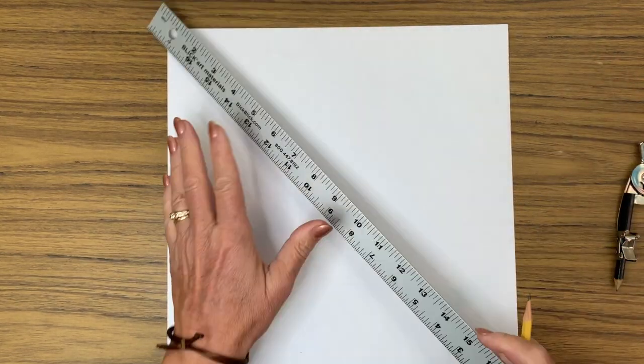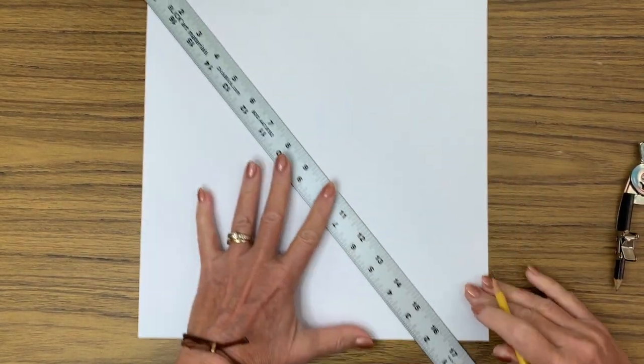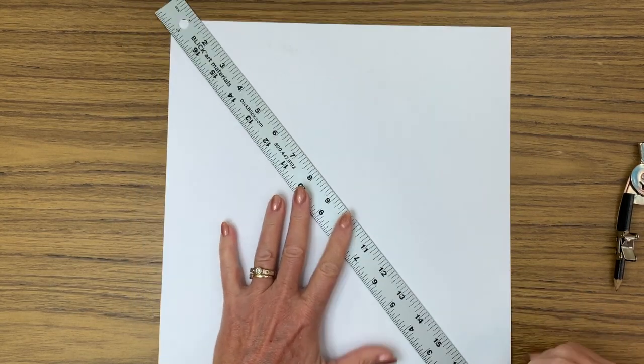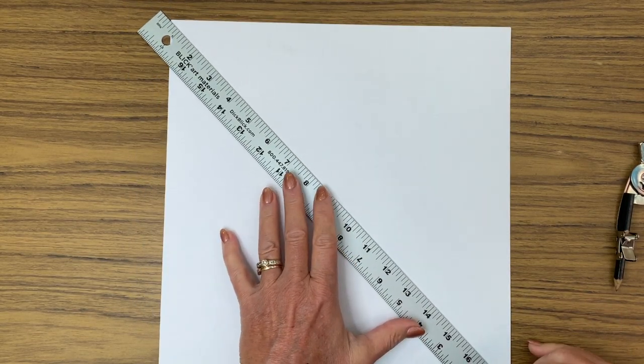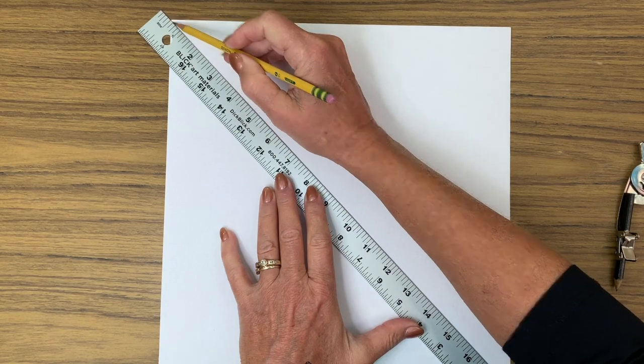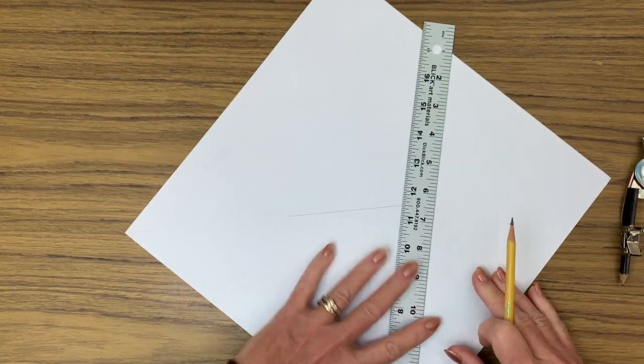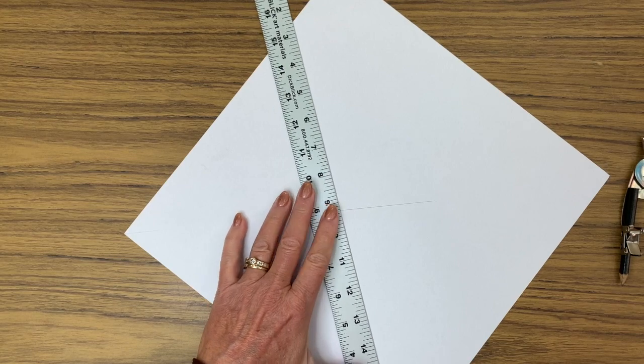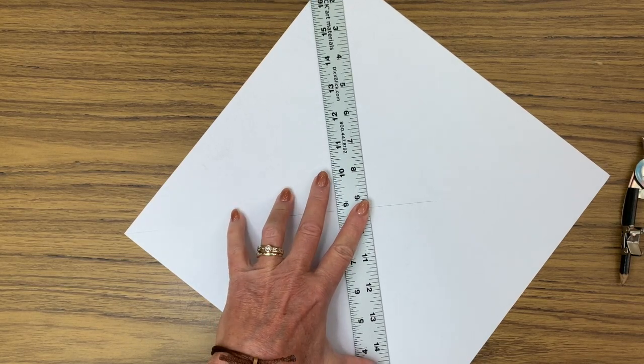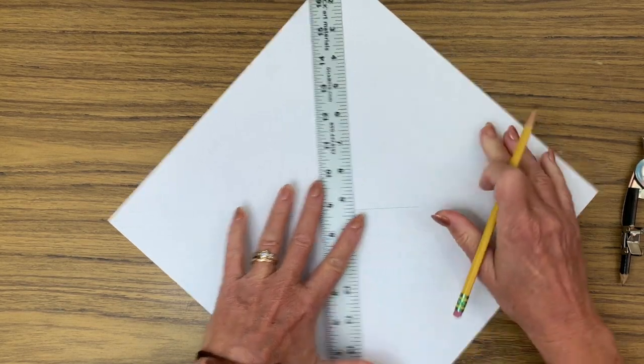I'm starting with a square piece of paper. Mine is 12 by 12. Whatever you can find will work fine. I need to find the center of the paper because this will be the center of my circle. I'm drawing an X from corner to corner using a ruler.